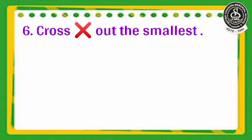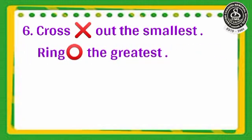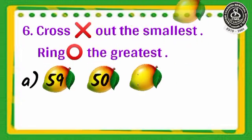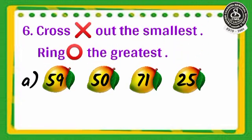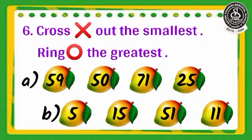Question number 6. Cross out the smallest and ring the greatest. A: 59, 50, 71, 25. B: 5, 15, 51, 11. Here you have to cross out the smallest number and ring the greatest number.